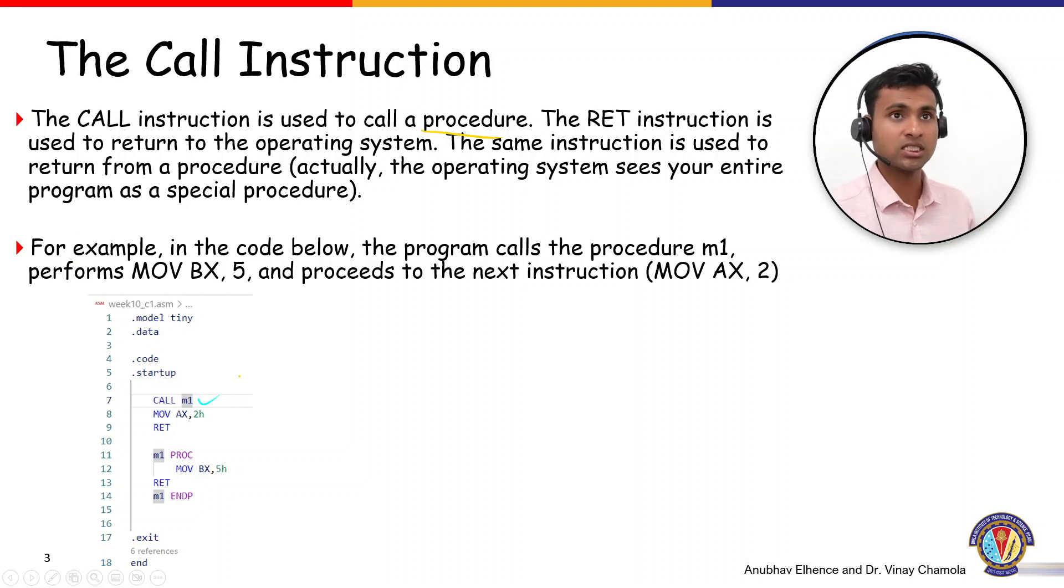Nothing is going into the data section at the starting. What we're doing is just calling the m1 function, the m1 procedure. In the m1 procedure, we're moving the value 5h into the BX register. After executing this move operation, we'll expect that AX will be having 2h and BX will be having 5h. Let's see the execution of this quickly.